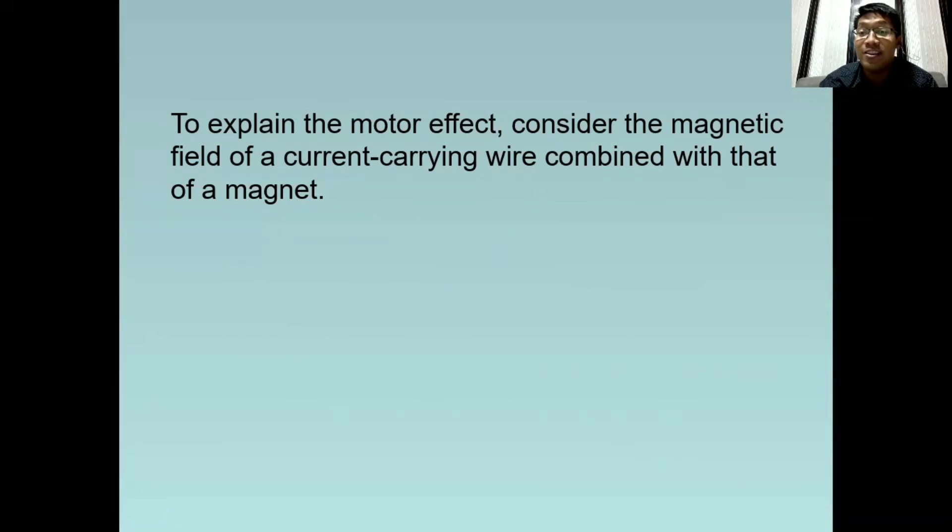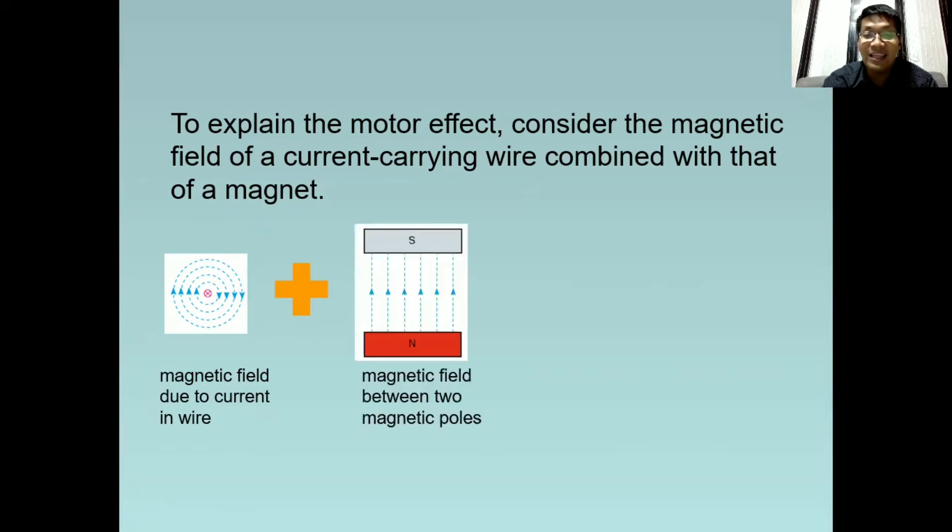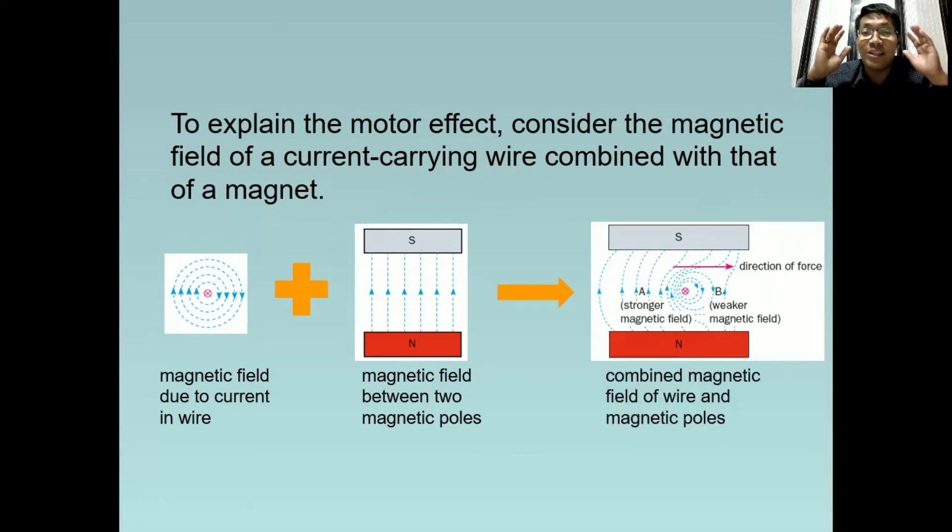To explain the motor effect, consider the magnetic field of a current carrying wire combined with that of a magnet. So this is the magnetic field due to the current in a wire. Then this is the magnetic field formed by a magnet. Kung titignan ninyo, ang direction ay from north to south. Laging ganon. And the result will be like this. So parang meron tayong dalawang magnetic field na nag-i-interact sa isa't isa. At dahil sa interaction nila, magkakaroon ng force. At itong force na to, ang reason kung bakit gagalaw ang wire. And this movement is what we call the motor effect.